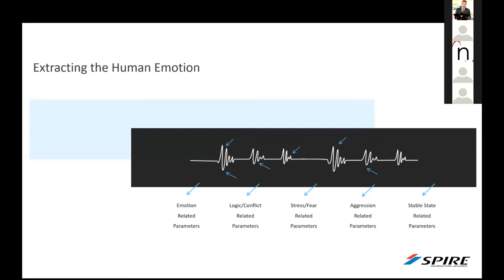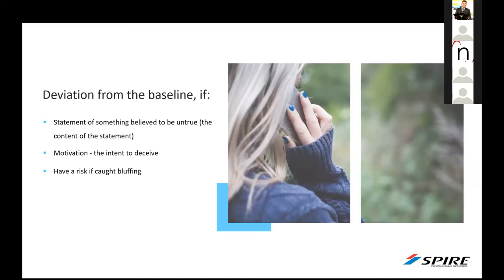The unique and crucial dimension of LVA technology is to reveal inner and deeper emotions not noticeable by traditional methods of assessment. Emotional changes and deviation from the normal state occur — and genuine emotional analysis can be delivered — only if three rules apply: when the person knows he is not telling the truth, when he is motivated to convince the listener with his fake story, and when he experiences jeopardy — having something to lose if caught bluffing.